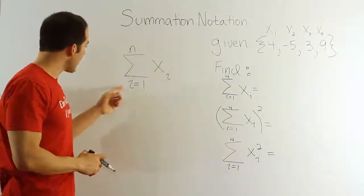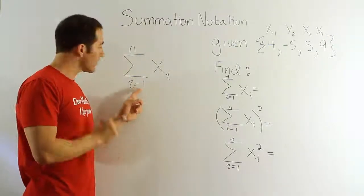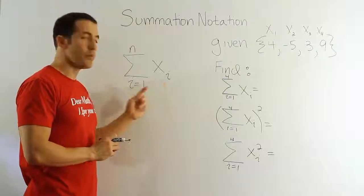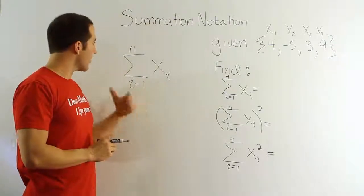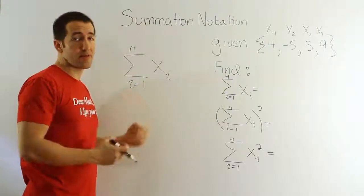Here, when it says i equals 1 to n, it doesn't mean the number 1, it means the first x value you have. And you're going to add that to all the x values, from the first x value you have all the way up to the nth x value.